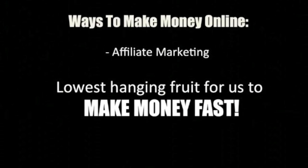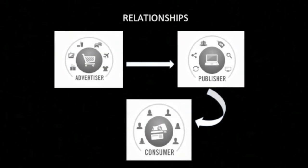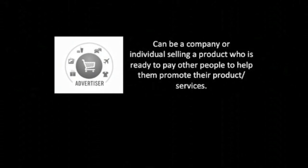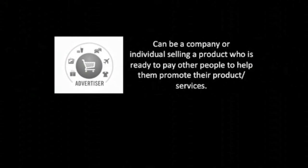The next one is affiliate marketing — this is the lowest hanging fruit for us to make money fast. Affiliate marketing at its core is about relationships between three parties: the advertiser, the publisher, and the consumer. An advertiser can be a company or individual selling a product or services who is ready to pay other people to help them promote.